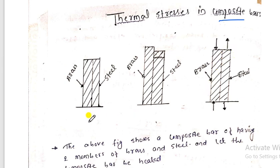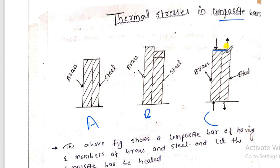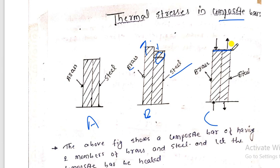In figure C, both bars compensate each other and behave as a whole unit. When heat is given to the brass, its expansion is more than steel. Steel tries to pull it down while brass tries to expand. Because of this interaction between brass and steel coefficients, both behave as a single composite unit with equal expansion.